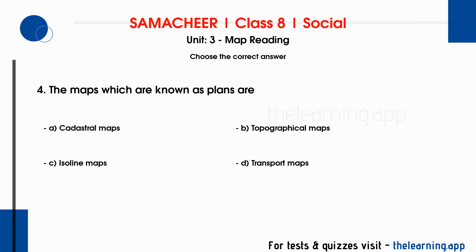Question 4: The maps which are known as plans are. Options are a. Cadastral maps, b. Topographical maps, c. Isoline maps, d. Transport maps. Correct answer is a. Cadastral maps.